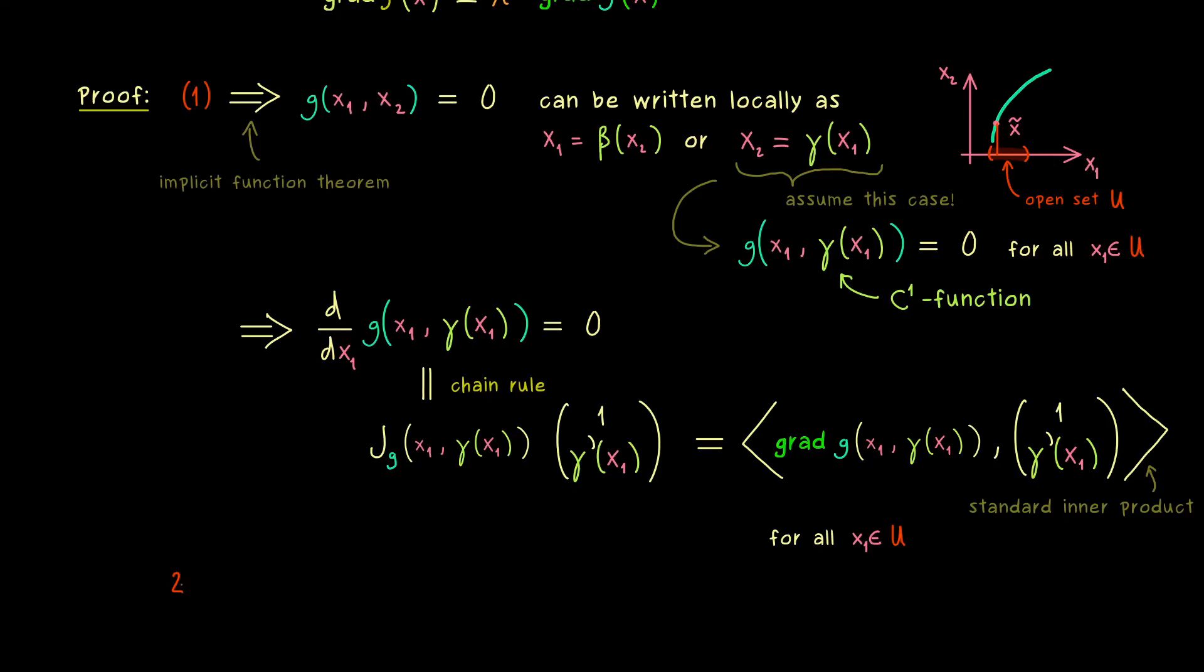Then let's continue the proof with our second condition. This one now implies that we can consider a new function f̂, which is just defined on the set U. And the restriction of f to the contour line of g. This means f̂(x₁) is given by the function f with 2 inputs. Where the first one is x₁ and the second one is our γ(x₁). So it's also a composition and therefore a C¹ function as well.